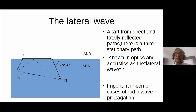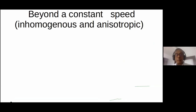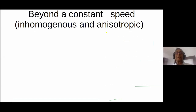Now we're ready to go to an application of Fermat's principle when the speed is not constant. When the speed is not constant, it could happen in a couple of ways. The speed could be different in different directions — that's what happens in a crystal, which we call anisotropy. We won't get into that, even though crystal optics is a fascinating subject. You could also have a medium where at every point the speed is the same in all directions, but at different points the speed is different. The word for that is inhomogeneous.